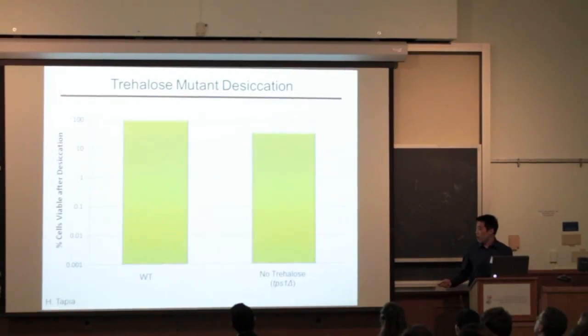Looking at this graph, this shows the percent of cells alive after desiccation in a logarithmic scale, meaning that each step is a tenfold difference. However, when you compare the no trehalose mutant with the wild type, there is no significant change in desiccation tolerance.